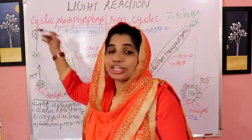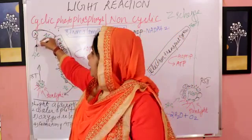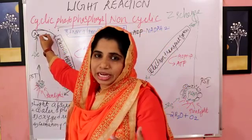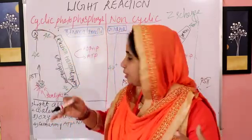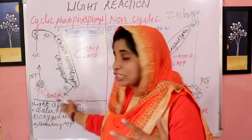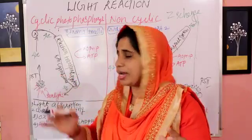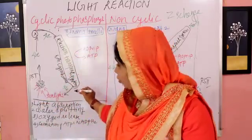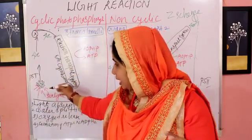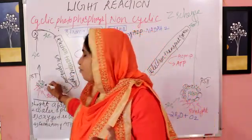That means high energy electrons are emitted. These high energy electrons go to the primary electron acceptor. There is an electron transport system — electron carriers in the cytochrome complex. Then this electron is returned back to Photosystem 1.